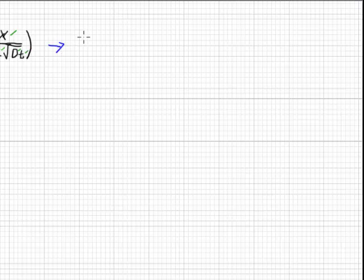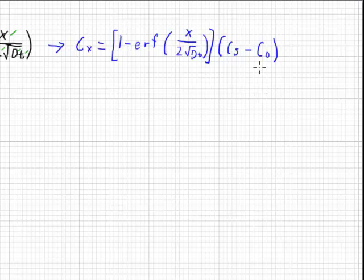Let's take this equation and rewrite it as follows. Cx equals 1 minus the error function of x over 2 square root of Dt. All of that is multiplied by Cs minus C0, and then finally to all of that I add the concentration at greater depth.